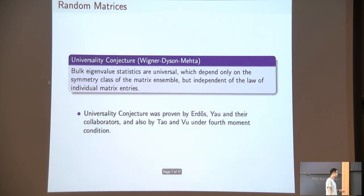This conjecture was proven about 10 years ago by Erdős-Yao, he's my advisor, and their collaborators, and also roughly at the same time by Tao and Vu. Thanks to this theorem, you can basically take any n by n matrix and for the entries choose any distribution you want, then this quantity as the size of the matrix goes to infinite always converges to the Gaudin-Mehta distribution.